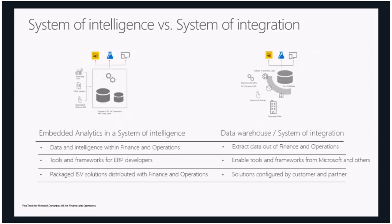On the system of intelligence side, the data and intelligence is within Finance and Operations, and there are tools and frameworks for developers to leverage it, plus ISV solutions available. On the data warehouse side — the system of integration — you extract data out of Finance and Operations and can use whatever tools or frameworks you want, since it's your database. You have complete control over it because data flows one way out of Finance and Operations, with no restrictions.